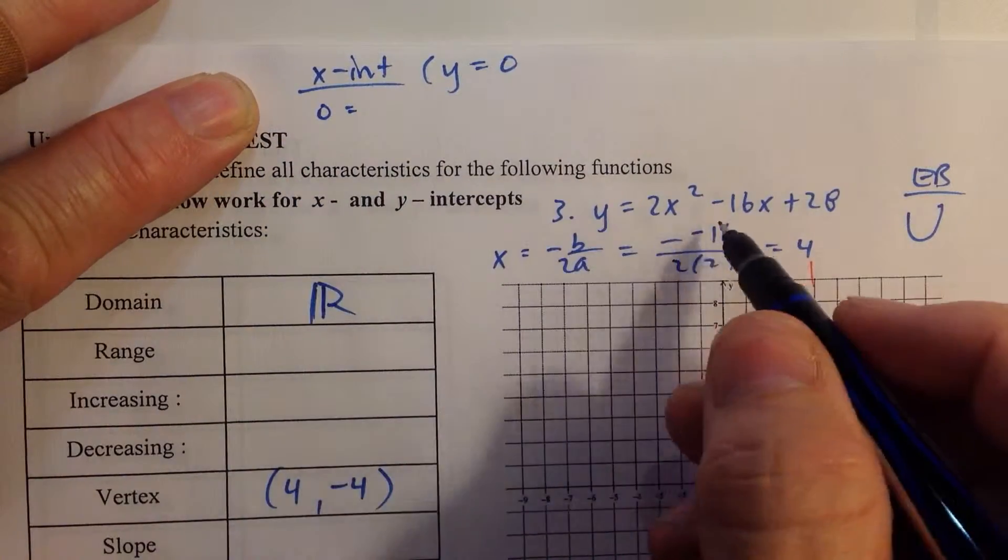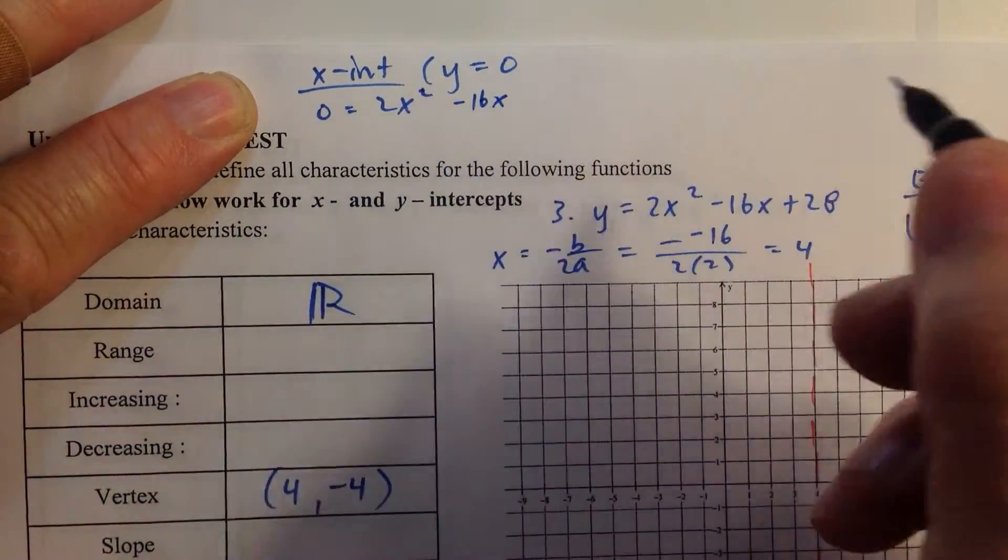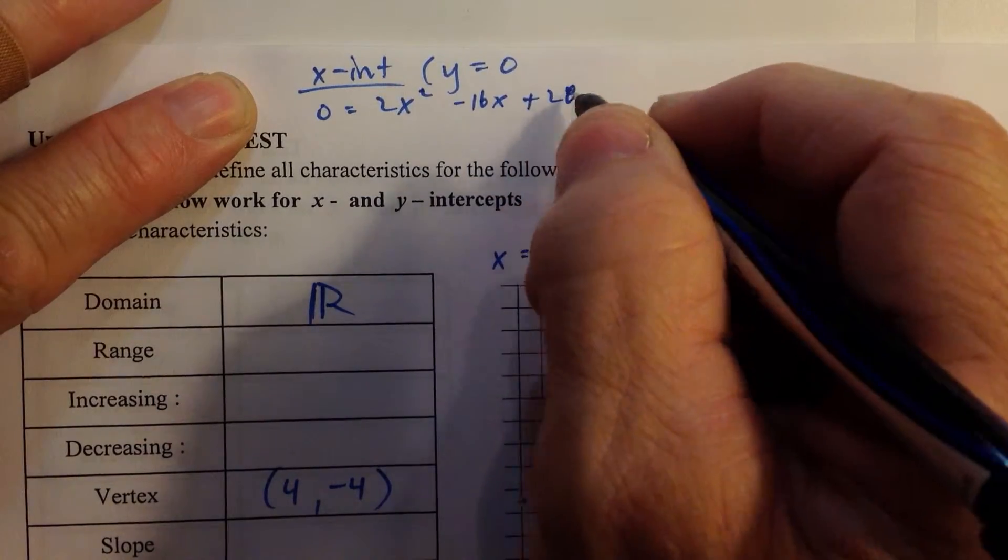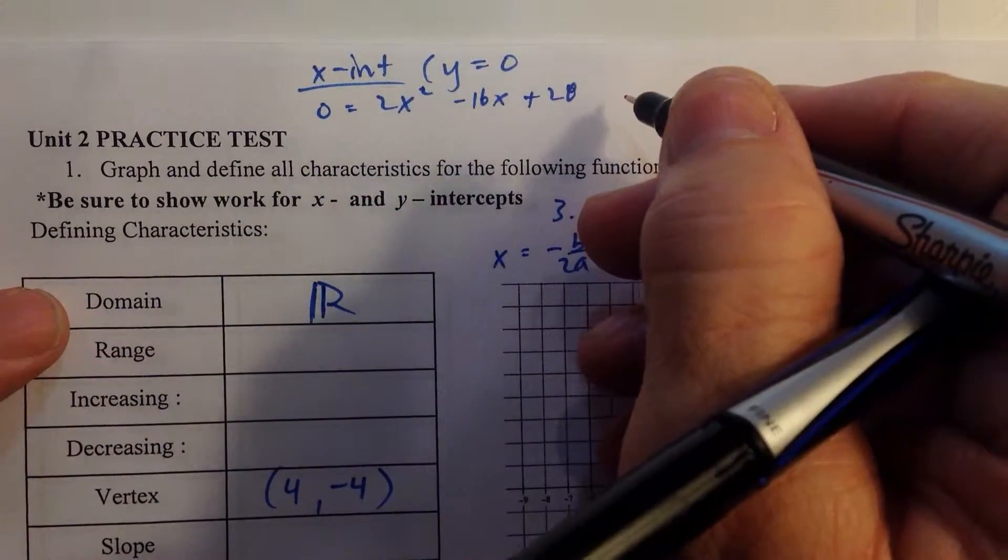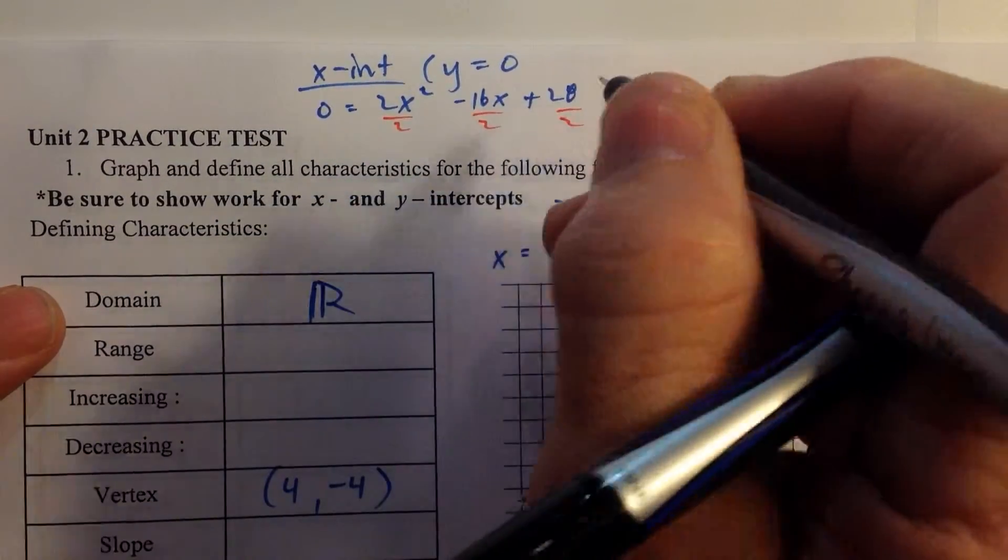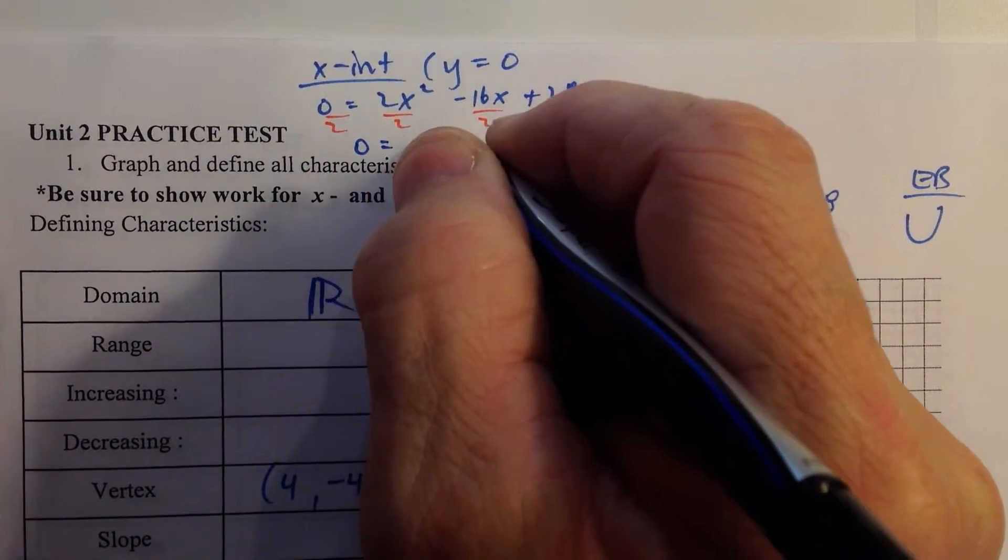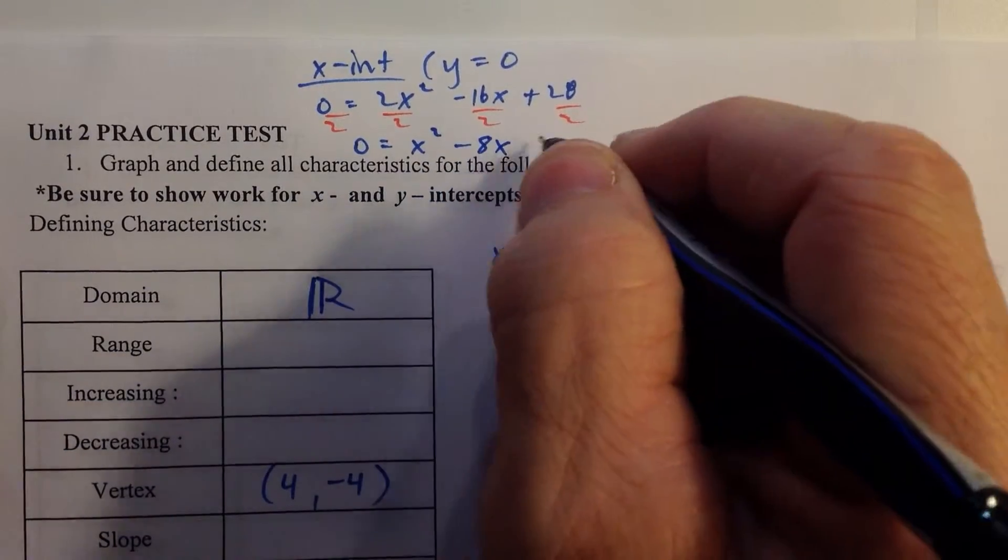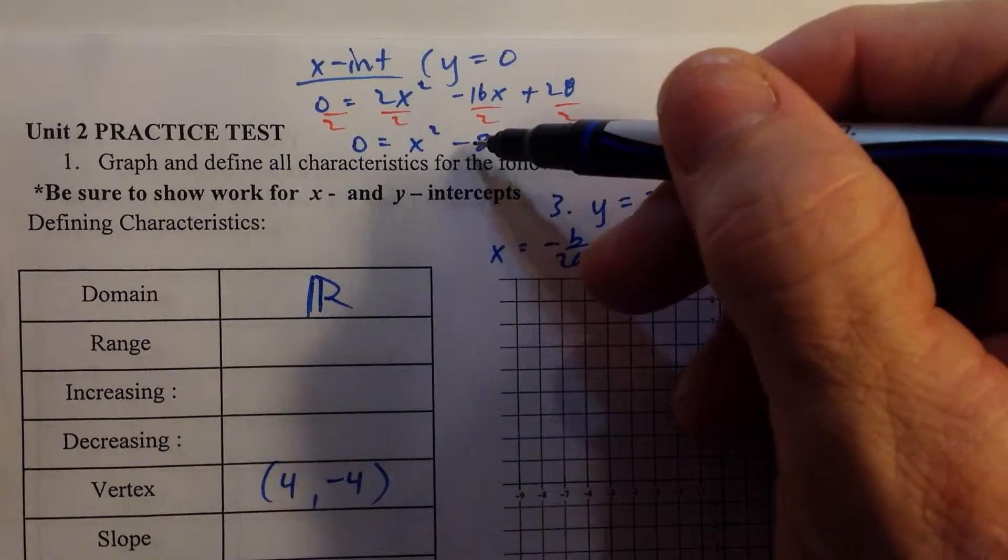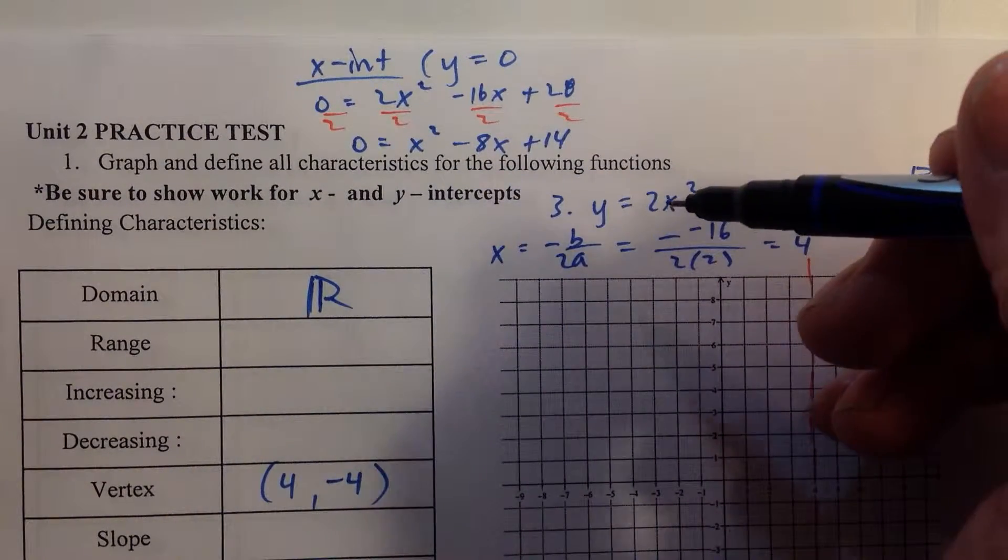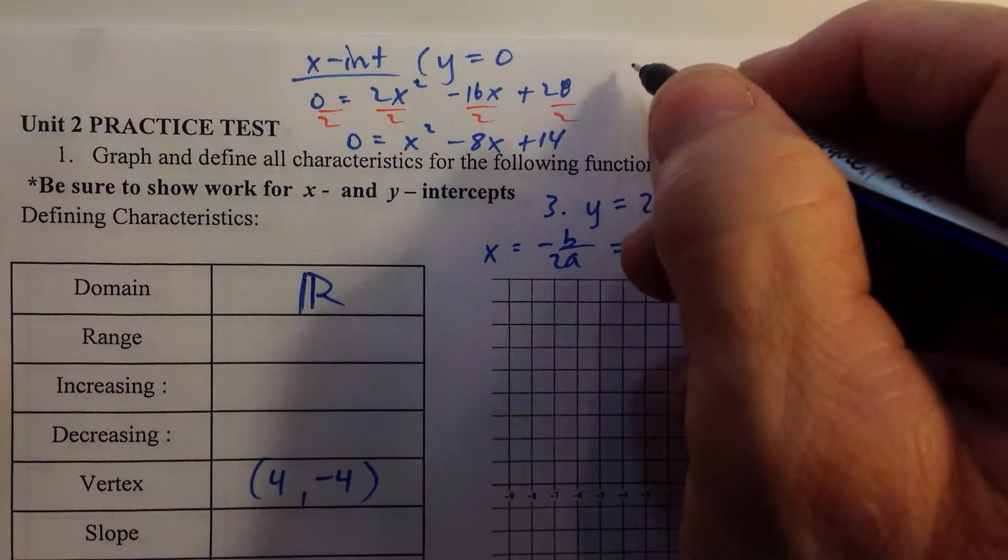x-intercepts, that's when y equals 0. So we're going to let y equal 0, and we're going to solve this resulting equation. This is kind of our bread and butter in this unit 2. Now notice, first thing I want to do is I want to see if I can factor this. But before I see if I can factor, I'm going to go ahead and divide everything by 2, every term by 2. That way my equation is much simpler. 0 equals x squared minus 8x plus 14. And I need factors of 14 that add up to negative 8. But we don't have any. 14 is 7 and 2 or 14 and 1. So we have no factors, so we're going to have to use the quadratic formula.